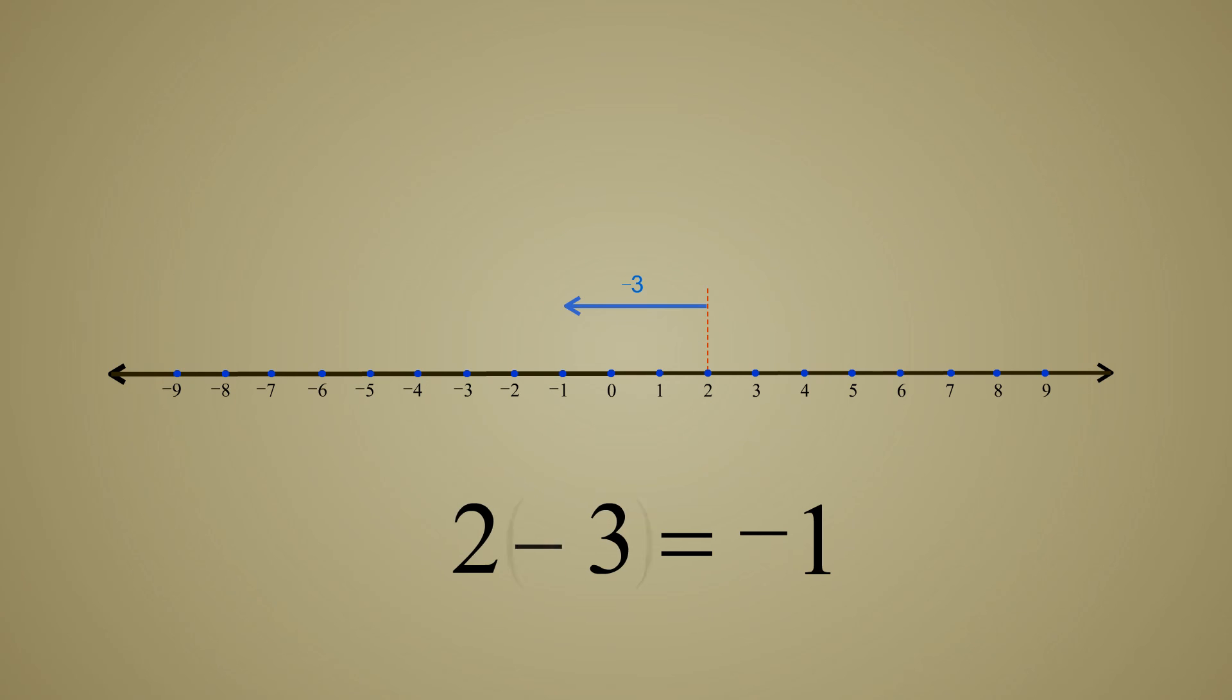We have also seen that adding a negative integer means moving that number of units to the left. So subtracting a negative integer must mean moving that number of units to the right. Subtracting a negative number is the same as adding a positive number.